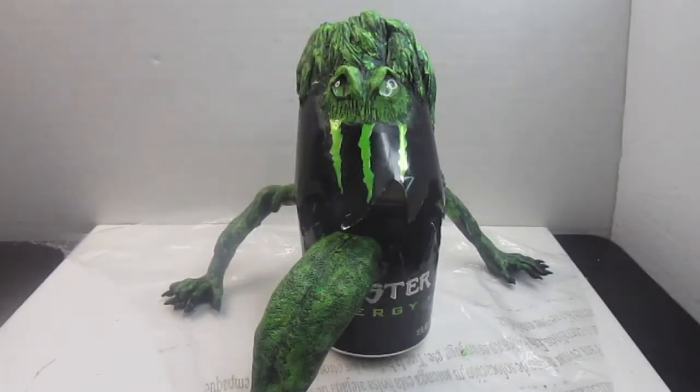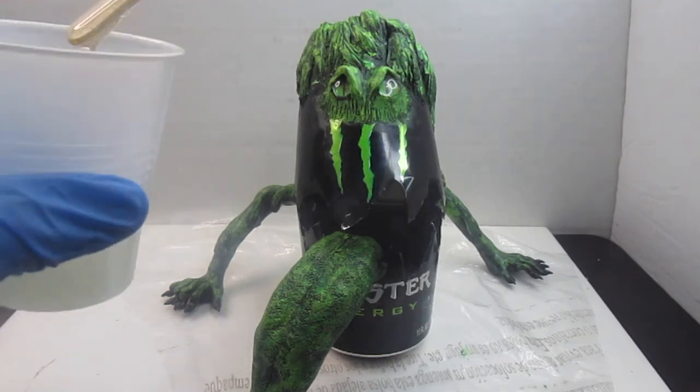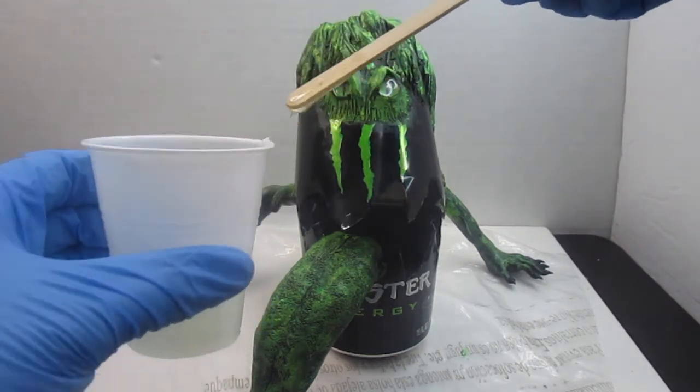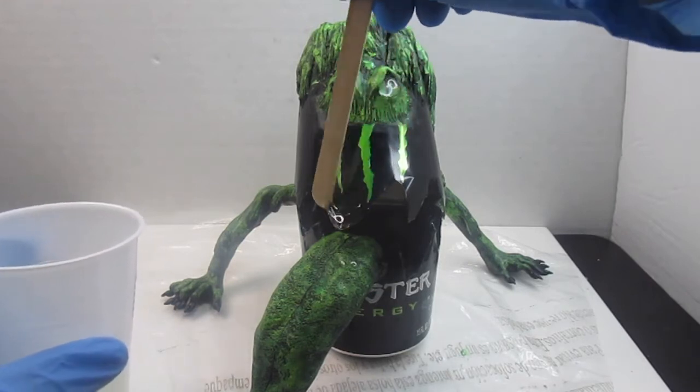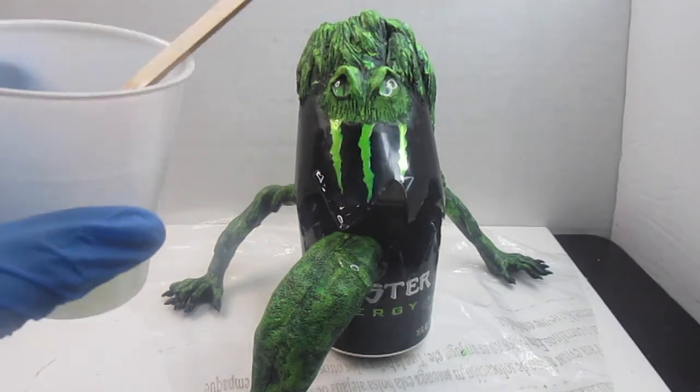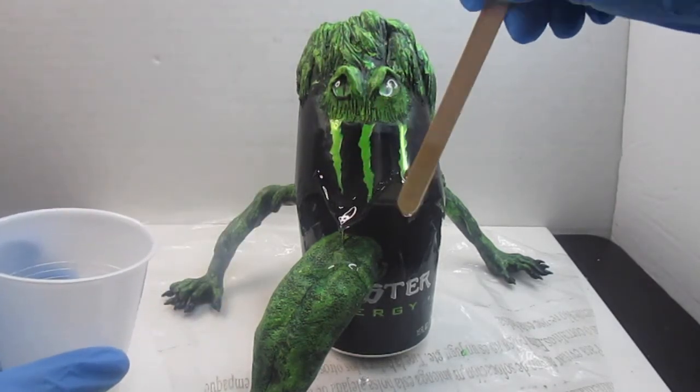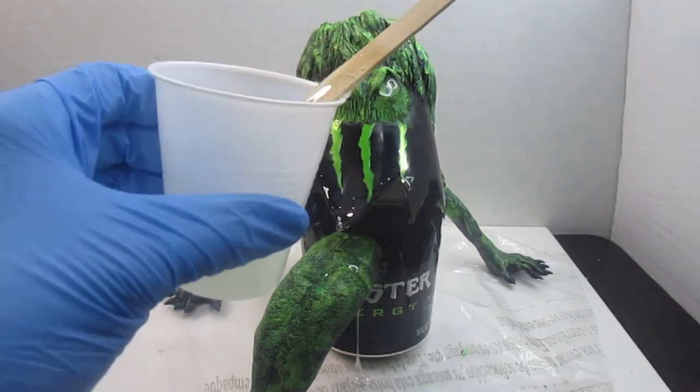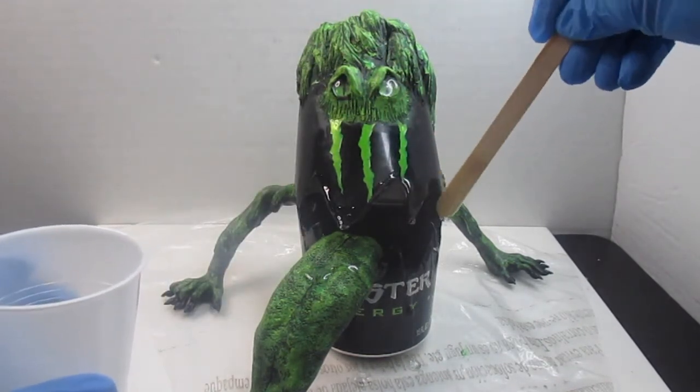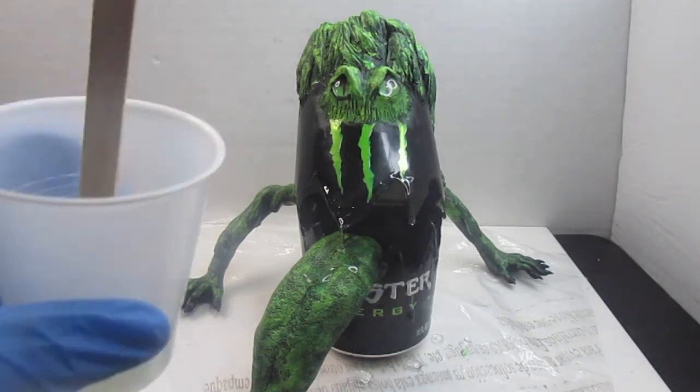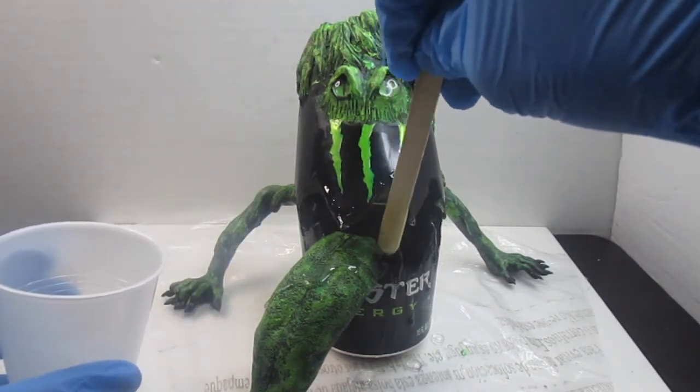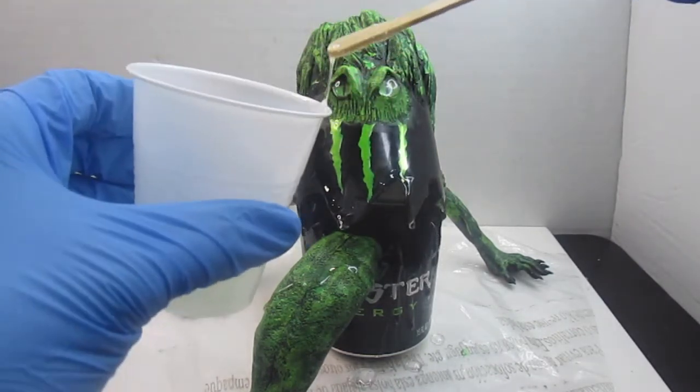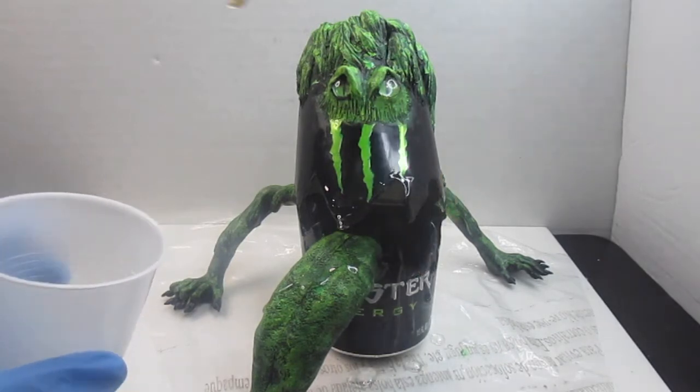When I'm satisfied with the way he's painted, I mixed up some epoxy resin and this has a double purpose to it. Number one, I wanted him to look slimy and slobbery looking because he is a monster. And number two, it gives it a hardened effect. It'll definitely protect the aluminum from cutting people.